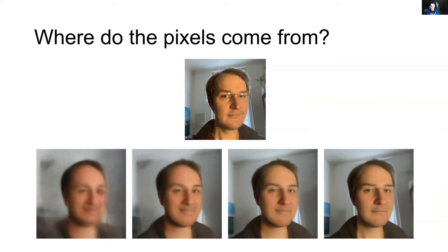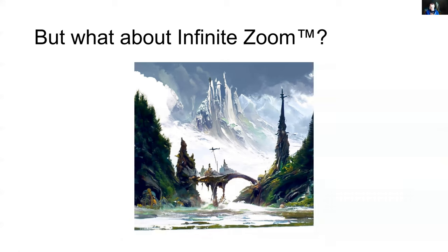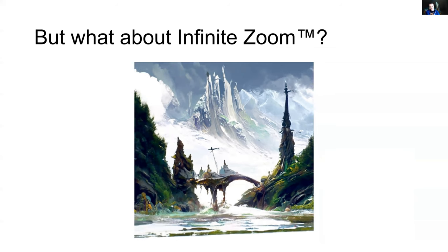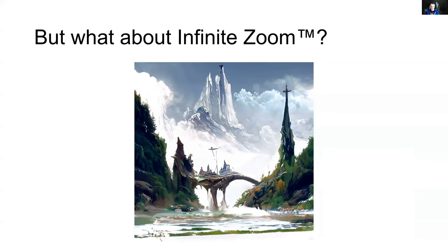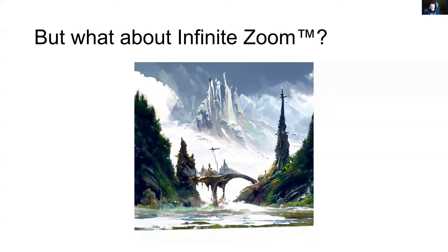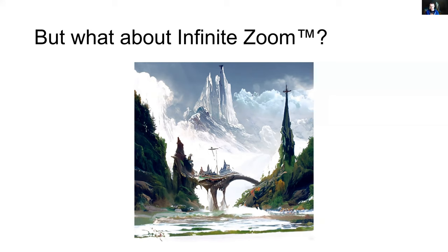Now, how do infinite zoom animations work? Having talked about the individual steps of text-image prompt matching and the different algorithms, it's actually pretty straightforward. You take an image produced by an ML algorithm, apply some kind of image transformation — for example, zoom in and rotate a little bit — and then use that as input for the next step of the machine learning model to hallucinate something based on that. Starting with this, you zoom and rotate a little, let the machine learning system hallucinate new information on top of that, and just keep doing this over and over again to get a seemingly infinite amount of new visual information.